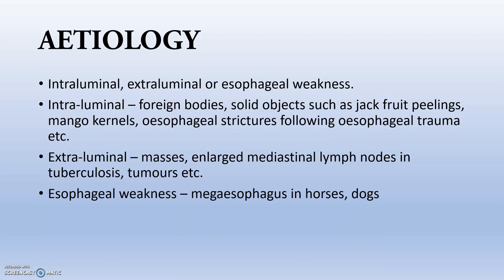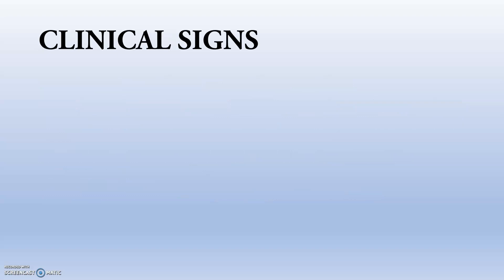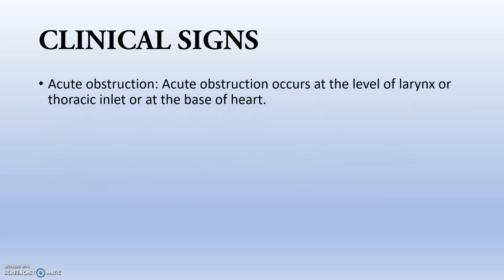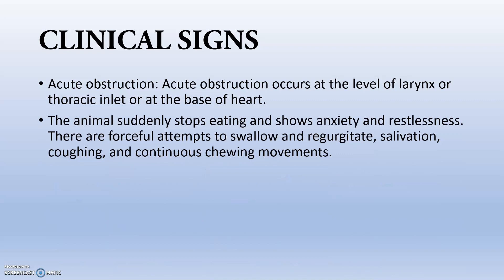Esophageal wall weakness can result in megaesophagus in horses and dogs. In acute obstruction, the obstruction occurs at the level of the larynx, thoracic inlet, or base of the heart. The animal suddenly stops eating, shows anxiety and restlessness, makes forceful attempts to swallow and regurgitate, has poor salivation, and shows cuffing with continuous chewing movements.